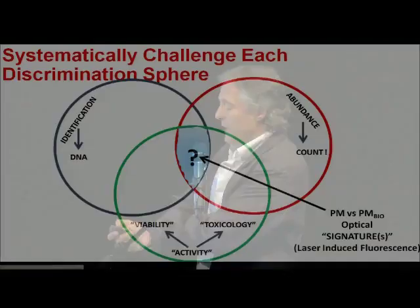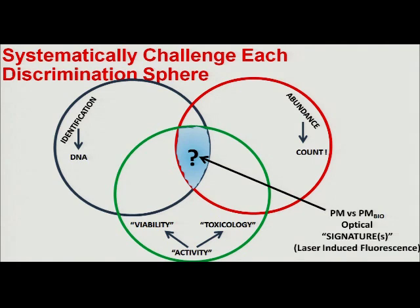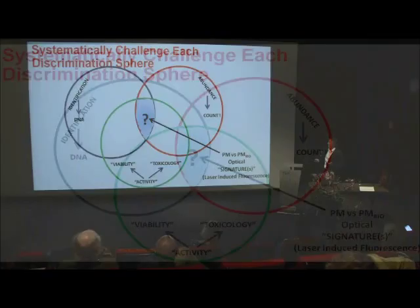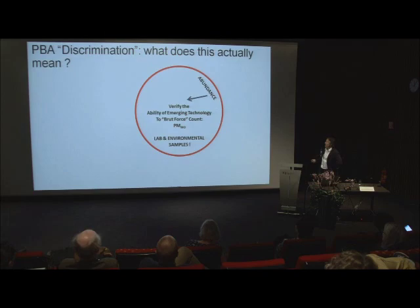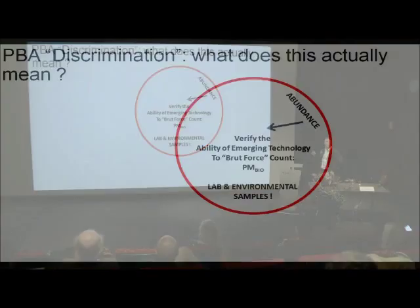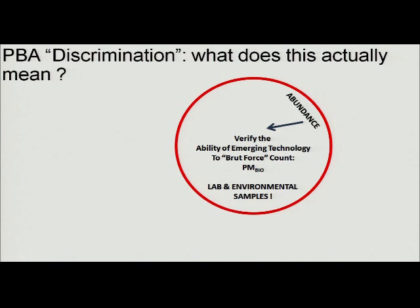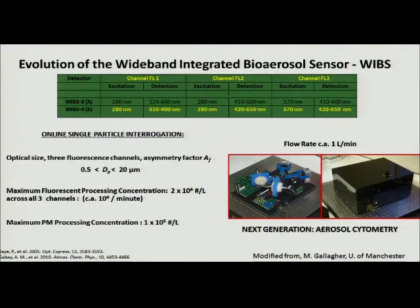Fundamentally, we're looking at what fraction of the airborne particles, with some high degree of confidence, are biological in nature, and can we use optical signatures — as we used to with microscopy — to get there. This technology is called laser-induced fluorescence. It's really about getting to the question of abundance and literally brute-force counting what's floating around, classifying that both in lab and environmental samples with optical technology.